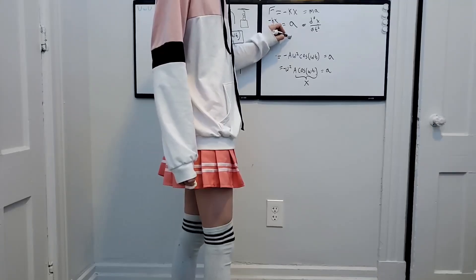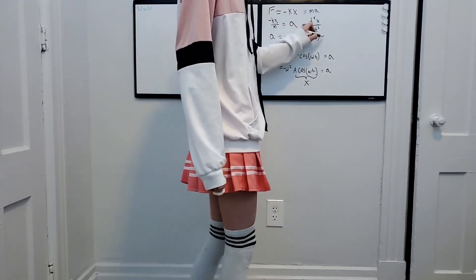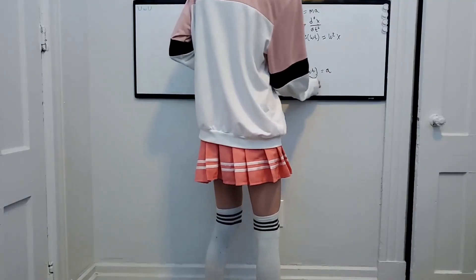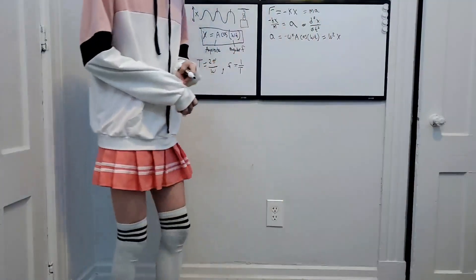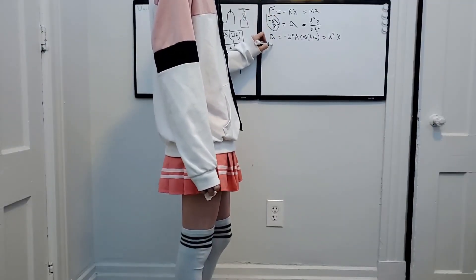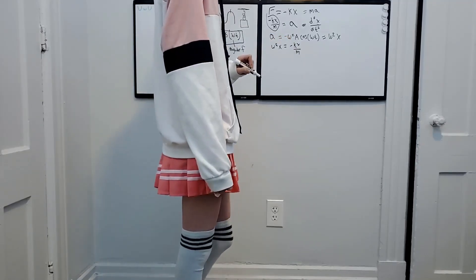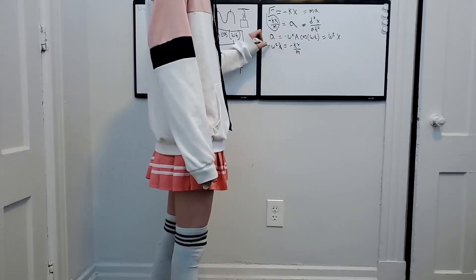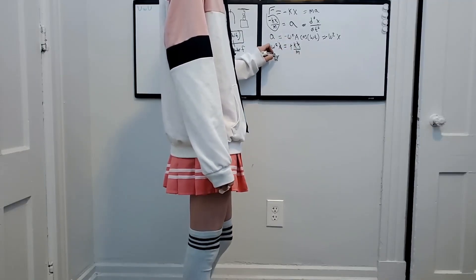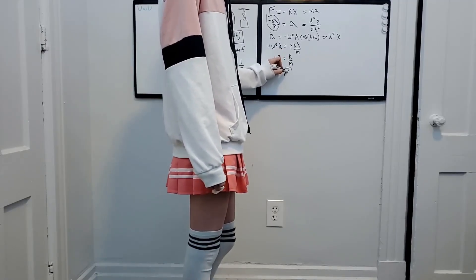Rearranging a little bit, we can write acceleration equals negative omega squared times A cosine omega t, which is equal to negative omega squared times x. So we can say that negative omega squared x equals negative kx over m. Canceling the x's and the negatives, we're left with omega squared equals k over m, and omega equals the square root of k over m.